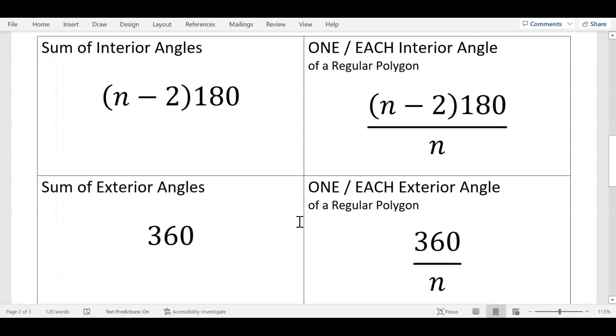I'm putting this on the board here. These are the four things we talked about the last four days. Sum of the interior is this. One or each interior is this. Sum of the exterior is always this. And then one or each exterior is this, of a regular polygon. So you're going to use these. Now, these are all in your notes, but I'm putting it on the board so it's in one place. You need to look at that.